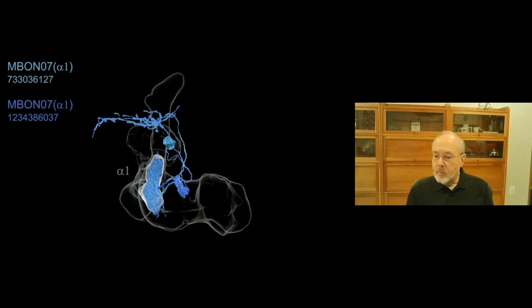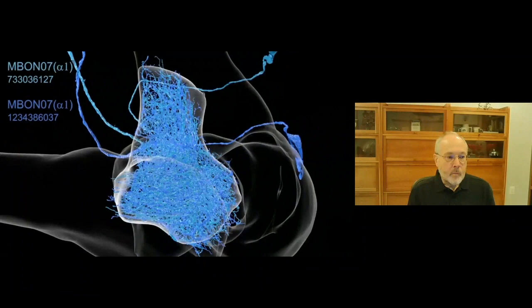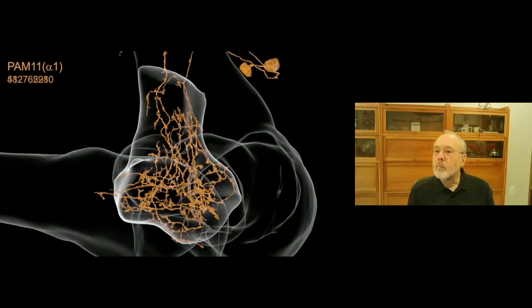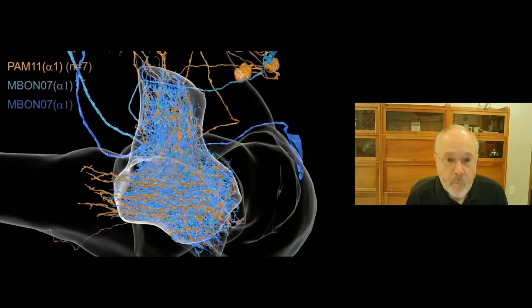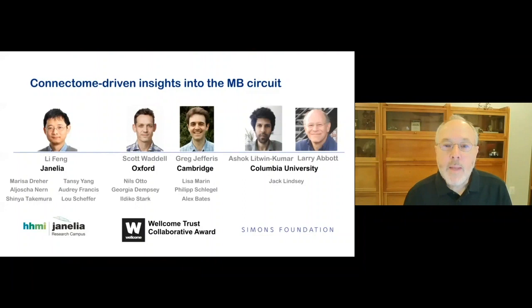Now we turn to the alpha 1 compartment. This compartment is filled by each of the dendritic trees of the two MBON7s. There are seven PAM11 dopaminergic neurons. Unlike the PPL dopaminergic neurons found in alpha 3, the axonal arbors of the individual PAM11 neurons occupy only a portion of the alpha 1 compartment. Collectively, however, they fill the compartment. Here, the two MBONs and seven dopaminergic neurons are shown together.